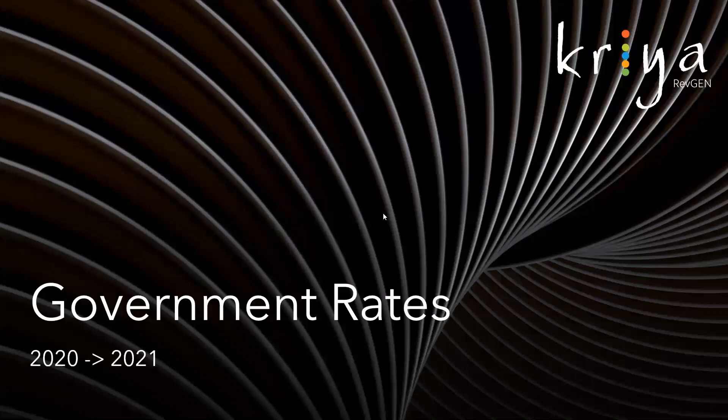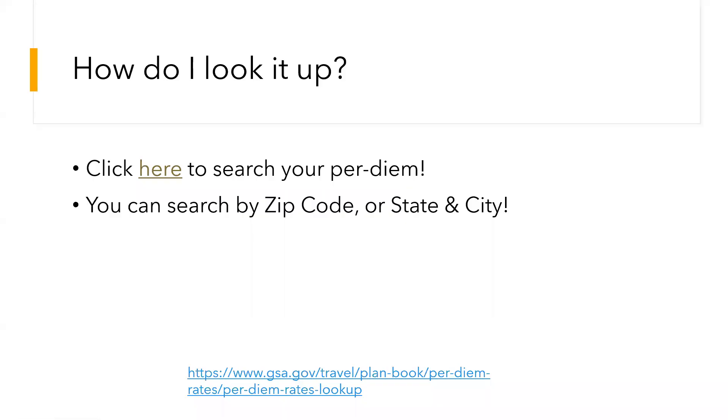Hello, everyone. This is Daniel from CreateRevGen, and this week we have a quick informational update video about government rates. It's late August, so the new government per diem rates are out for 2021. The fiscal season starts in October, so the changes you need to make to your government rates are coming up in just a little over a month. Let's dive in and take a look at the key points about the new government per diem rates and how to handle them.